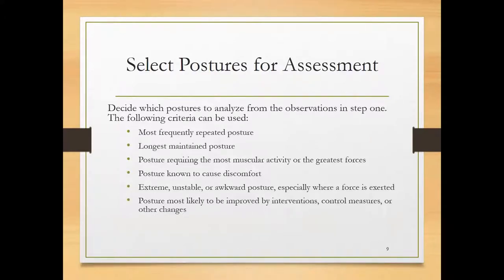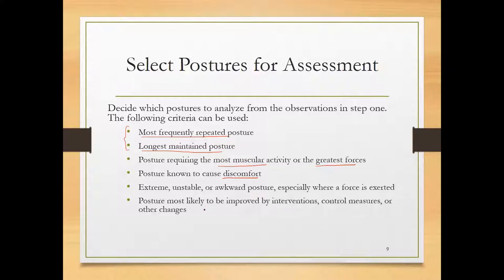How to select a posture for assessment using the REBA method: it could be the most frequently repeated posture, or the longest maintained posture — these are the most important criteria generally. It could also be a posture that requires a lot of muscular activity or involves a lot of forces, or the posture most likely to be improved by intervention, control measures, or other changes. In practice, a combination of these factors can also be used.